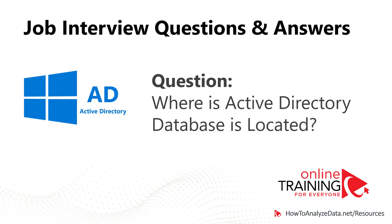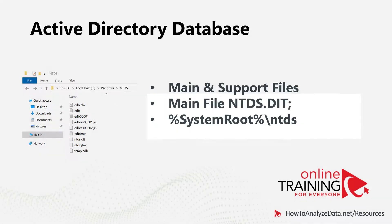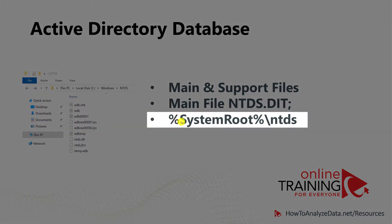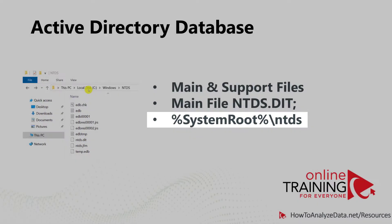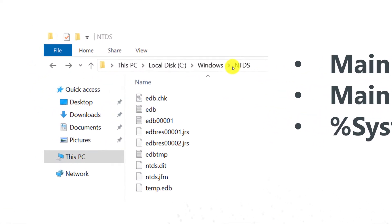A lot of times you might be asked the question: where is the Active Directory database located on Windows Server? To make Active Directory services possible, multiple files are involved. All of these files are located in the system root ntds folder, which is typically C:\Windows\NTDS.